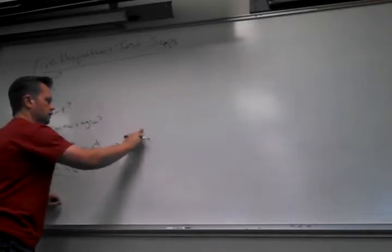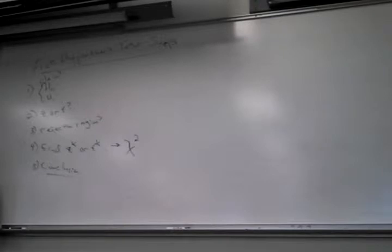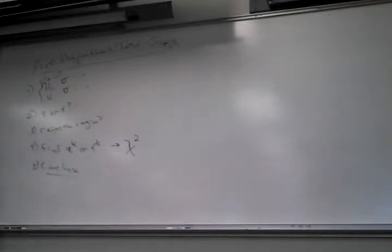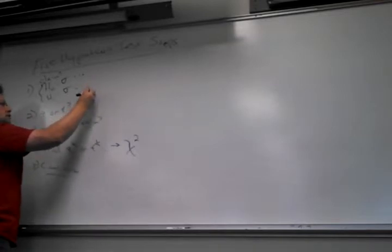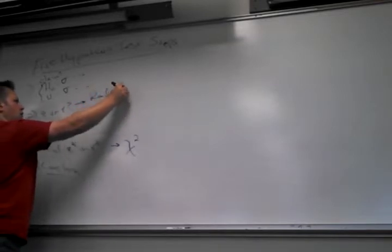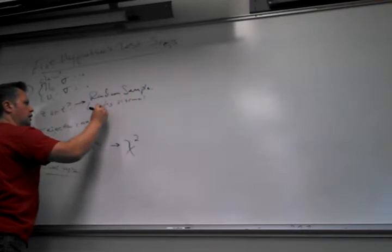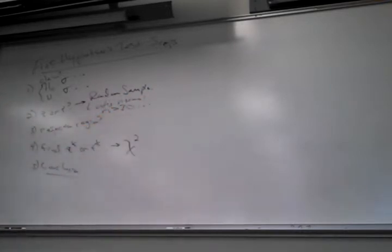We're going to calculate a chi-square based on our sample standard deviation. The claim is going to be about a standard deviation, so it's going to be sigma - the standard deviation symbol is going to show up there. Step two is actually more strict: you've got to make sure it's a random sample, make sure it looks normal, make sure n is at least 30. For us, n greater than 30 is fine, but in general it's a little more strict for chi-square.